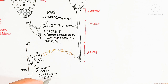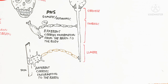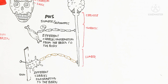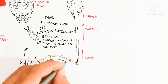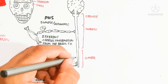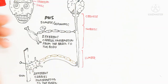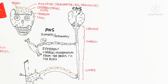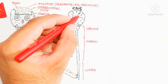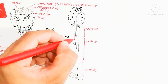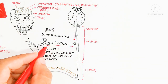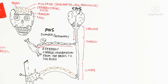Signals detected by the skin move to the central nervous system by electrochemical changes of sodium and potassium ions. Potassium is basically inside, creating a negative charge, while sodium moves in to change the electrical conduction from minus 70 millivolts to positive 50 millivolts, reaching threshold.